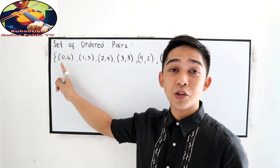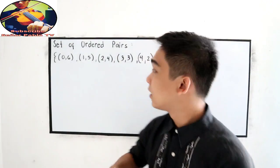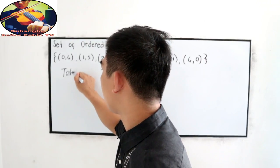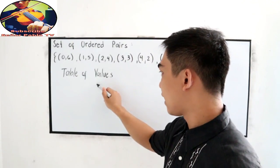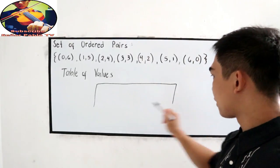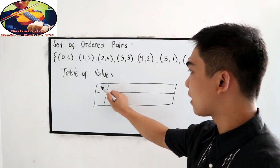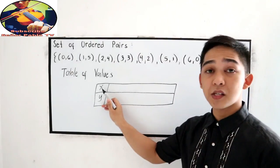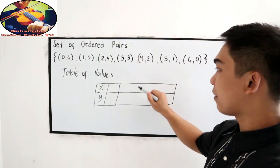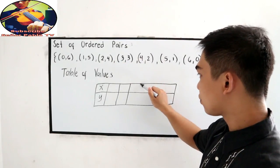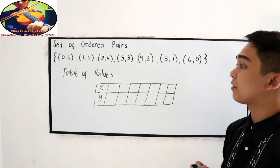Now, let us name it using our first method, the table of values. For the table of values, we will create our diagram and we will name it as x and y. So, we are talking about the abscissa and the ordinate. We have 7 sets.